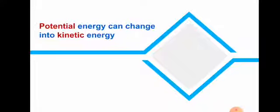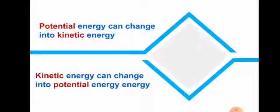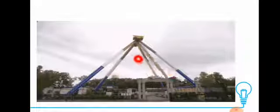Potential energy can change into kinetic energy, and also kinetic energy can change into potential energy. For example, look at this swing — it goes very high and stops for a moment. At that moment it has potential energy. After that, the potential energy changes into energy of motion — kinetic energy — as the swing moves again.